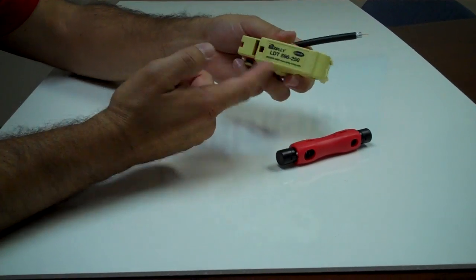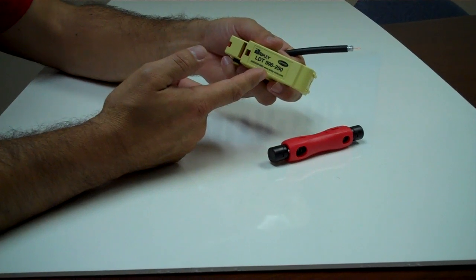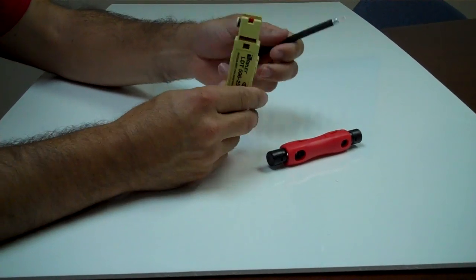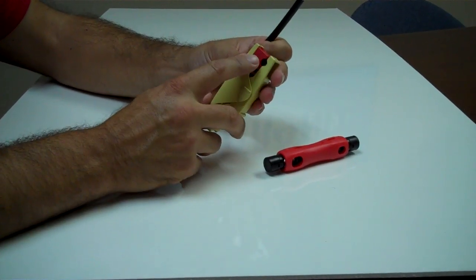We're used to using your traditional prep tool. This is my Ripley LDT-596250, excellent little tool, but obviously when the blades go bad you replace the cartridge.